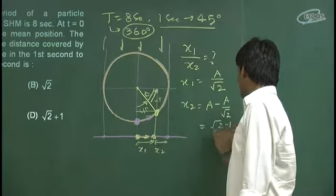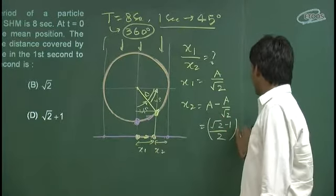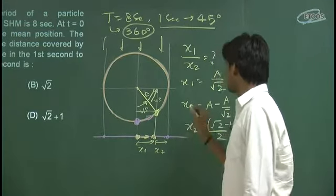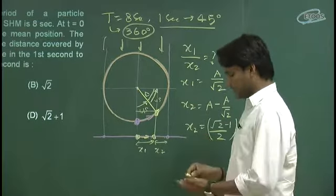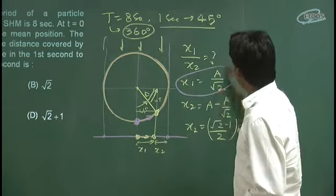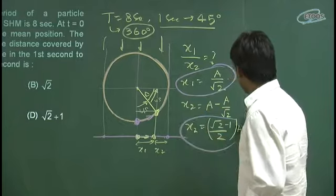To ye kya hogi? Root 2 minus 1 by root 2 into a. Ye to hoga x2. Or ye ho gaya x1. Ab khud hi dekho, x1 ye raha or x2 aap ke paas ye raha.